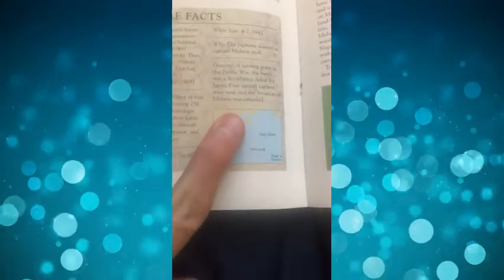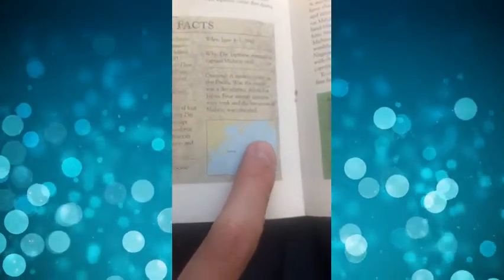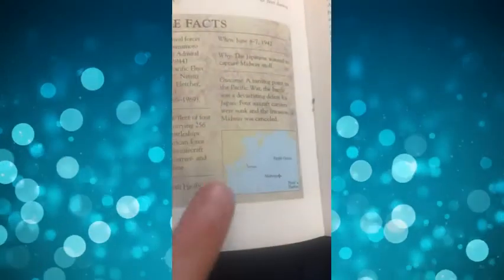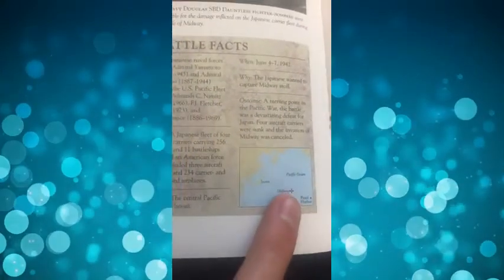And the United States kind of far right here. What happened was their plan was to kind of distract us up to these islands up here so that way they could like sneak right through into Midway and take over Midway, of course.